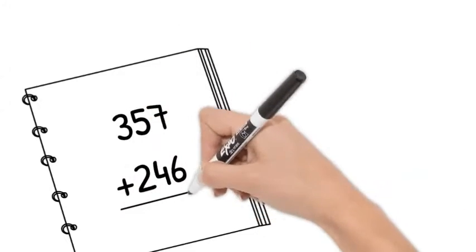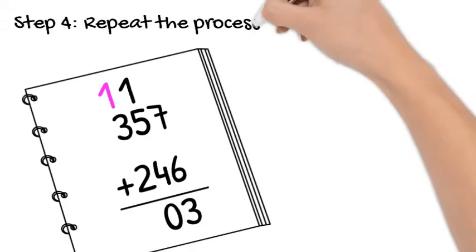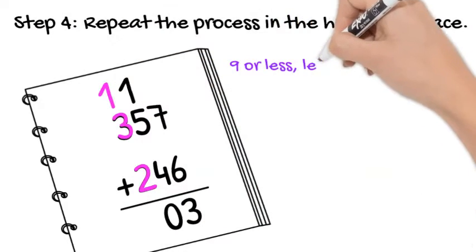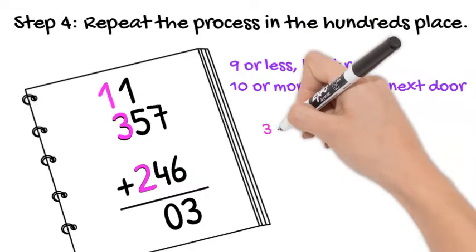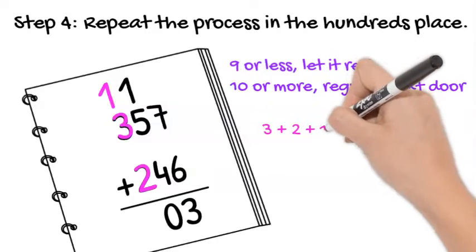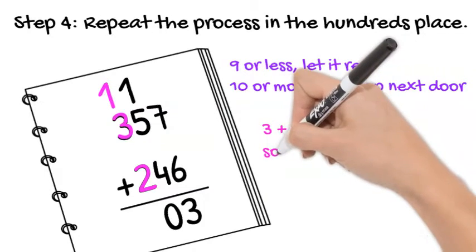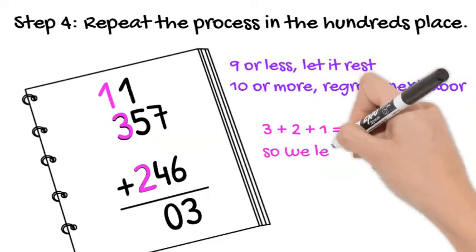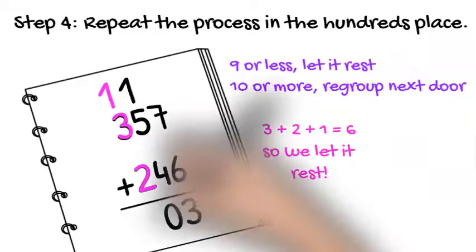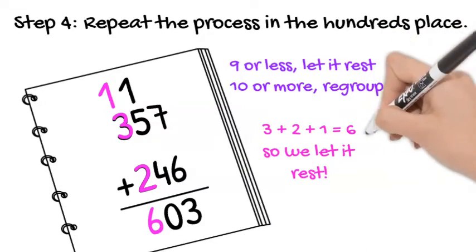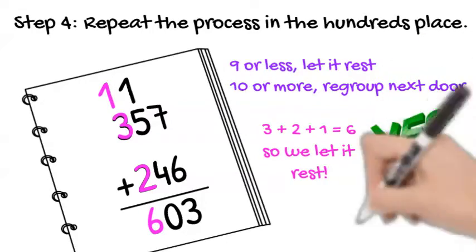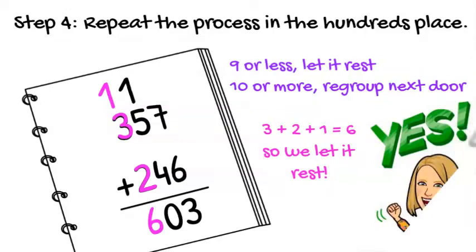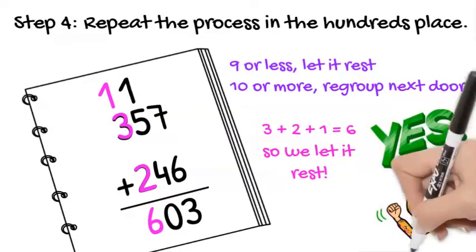Now, step four, repeat the process in the hundreds place. Once again, nine or less, let it rest, ten or more, regroup next door. We have three plus two is five. And then we have that one we regrouped in the last step, which makes six. Six is nine or less, so we can let it rest and we know we are done. Since that is the last place value place, we found out that our answer is six hundred and three. You did it.